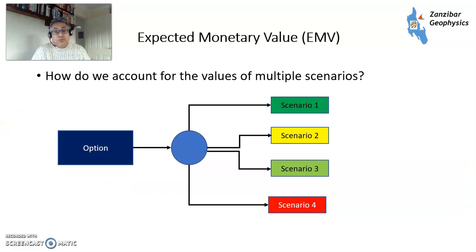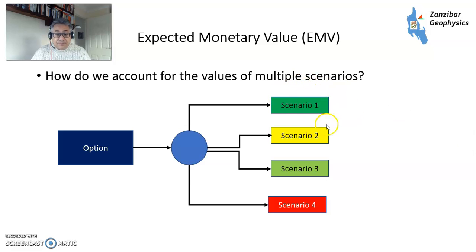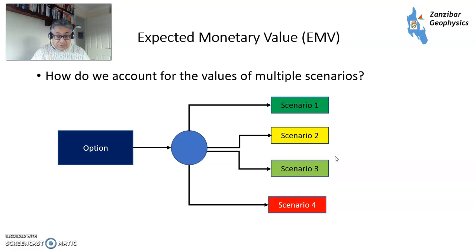How do you account for multiple scenarios? A lot of things can happen and you would tend to estimate several different scenarios which represent what could potentially happen. So here we have scenario one, scenario two, scenario three, and scenario four. Each one of these scenarios would have a value — could be positive, could be negative. So if you have a dry hole, you obviously have a negative value. If you have a success case, you should hopefully have a positive value. And each one of them would also have a probability.